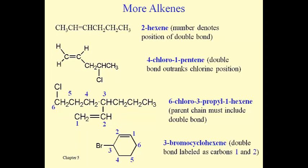These structures point out some important naming rules. Double bonds don't always start at the beginning of a chain — that's why the first example is 2-hexene, where the double bond starts at carbon 2 and goes to carbon 3. When locating a chlorine substituent alongside a double bond, the double bond outranks the chlorine, and also outranks the location of methyl groups, ethyl groups, or any halogen. When selecting the parent chain, it must include as many carbons as possible, the double bond must be part of that parent chain, and we number the chain to give the double bond the lowest possible number.